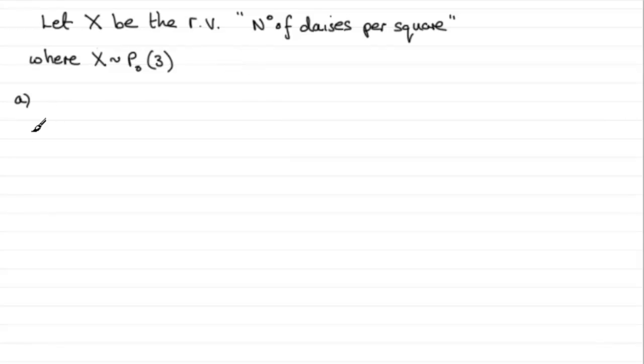And we're asked to work out the probability that the number of daisies per square is greater than 2. So X has got to be greater than 2. And to work that out, we could do 1 minus the probability that X is less than or equal to 2. And we've got various ways that we can work this out.